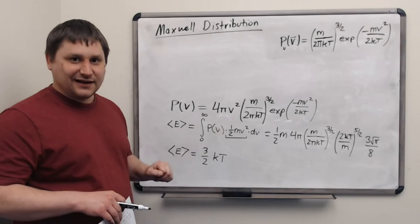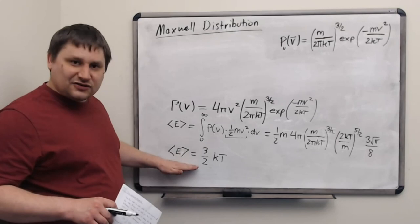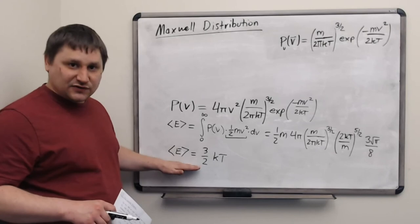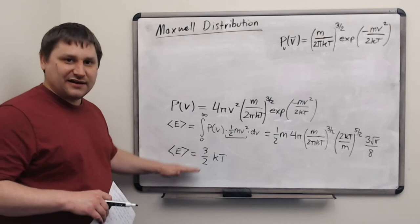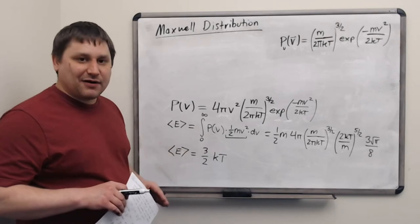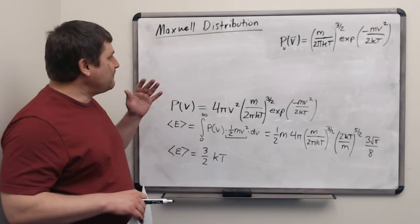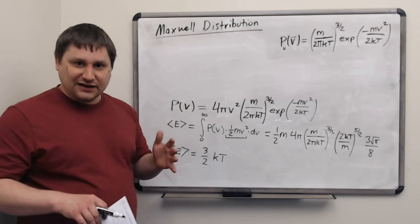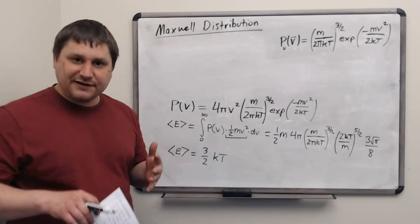These distributions tell us about probabilities and expectation values. The result that the average expected energy matches what we got from microscopic and thermodynamic models leads us to believe there should be a general connection between Boltzmann distributions and the thermodynamic potentials — a way of taking Boltzmann factors and combining them to generate a thermodynamic model. That will be the topic of the next video.